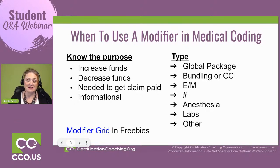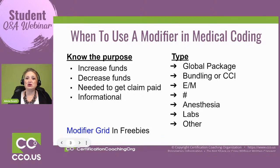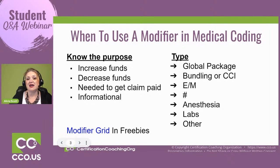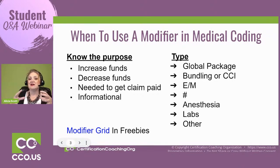Now let's talk about the types of modifiers. We've got global package modifiers. Whenever you have a procedure, it's going to have either a 10-day global package for a simple procedure or a 90-day global package for a more complex procedure. For example, if you cut your hand and get stitches, that's the 10-day — everything they do to put those stitches in and care for that wound is encompassed in 10 days. But if you have a hysterectomy, that's 90 days — all the care for that procedure is encompassed in a 90-day global period.